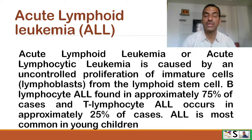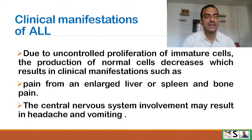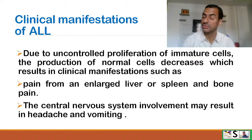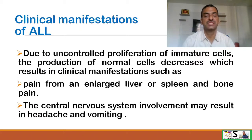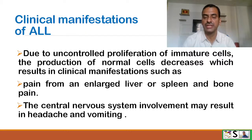Acute lymphoid leukemia is most common in young children. Clinical manifestations: due to uncontrolled proliferation of immature cells, production of normal cells decreases, resulting in pain from an enlarged liver or spleen and bone pain. Central nervous system involvement may result in headache and vomiting.